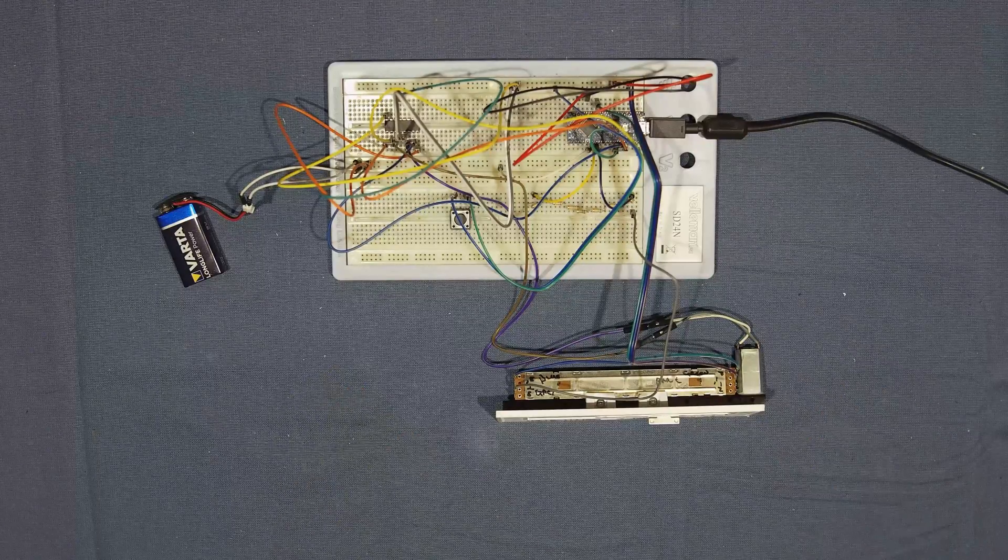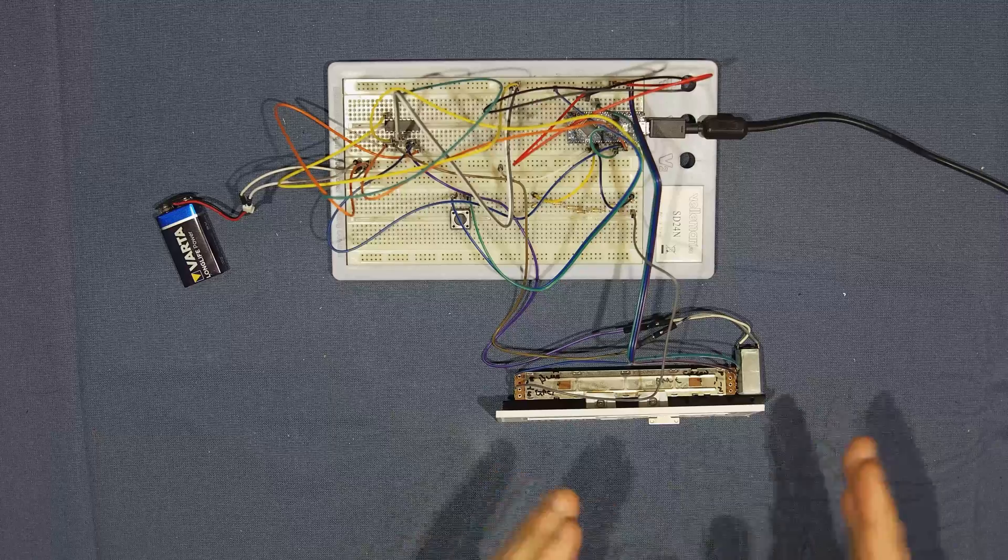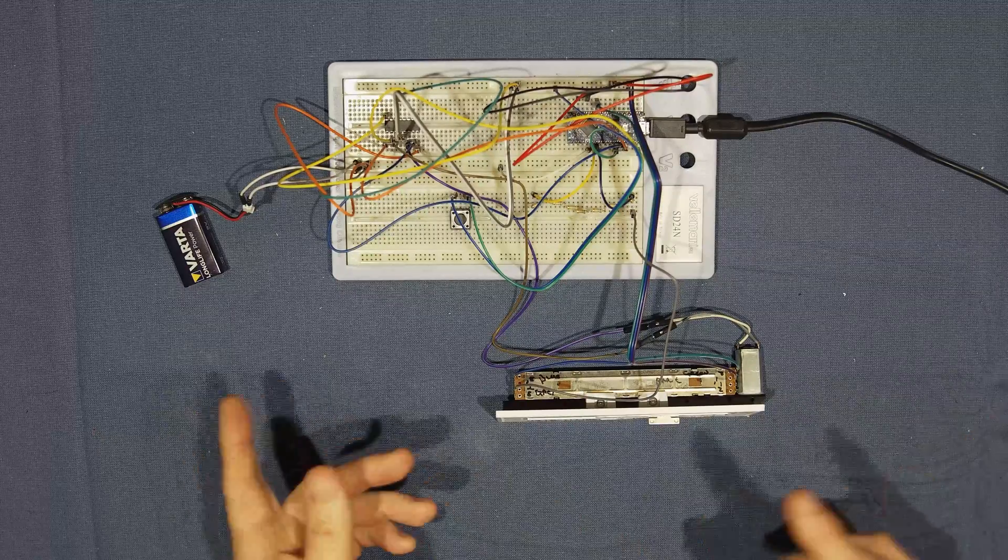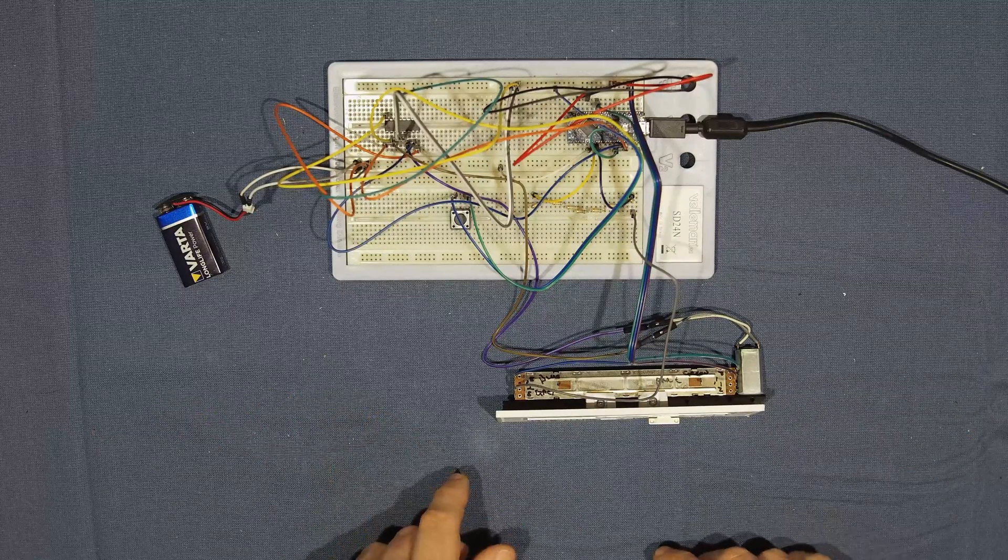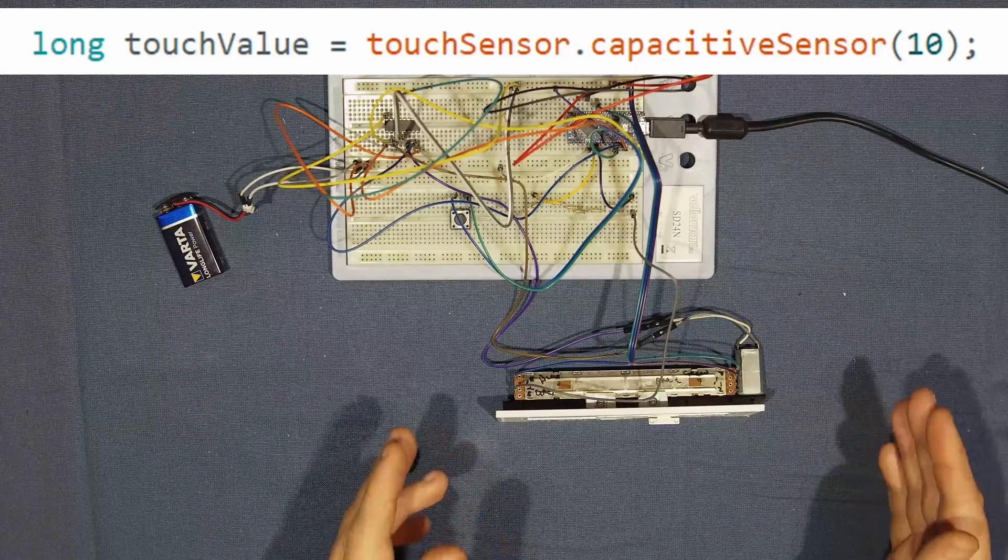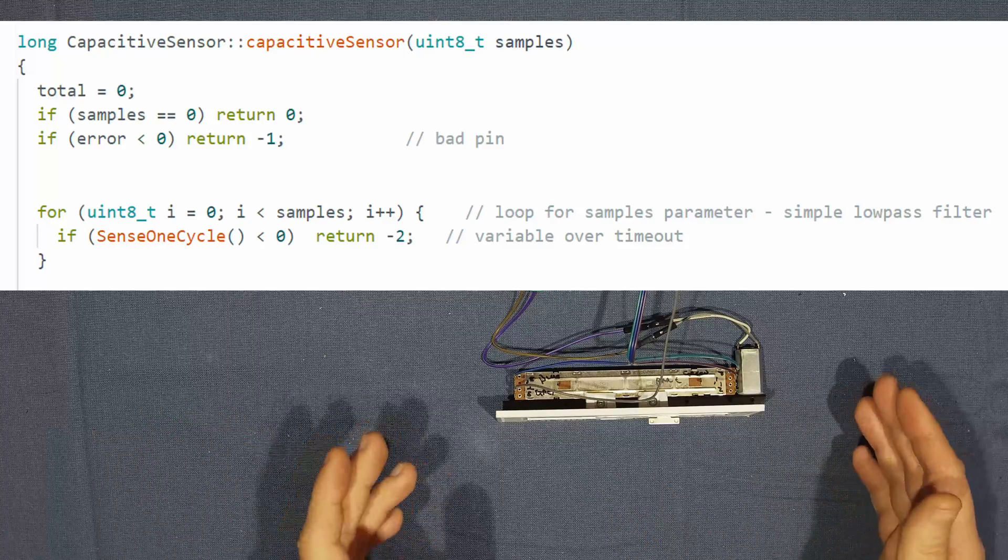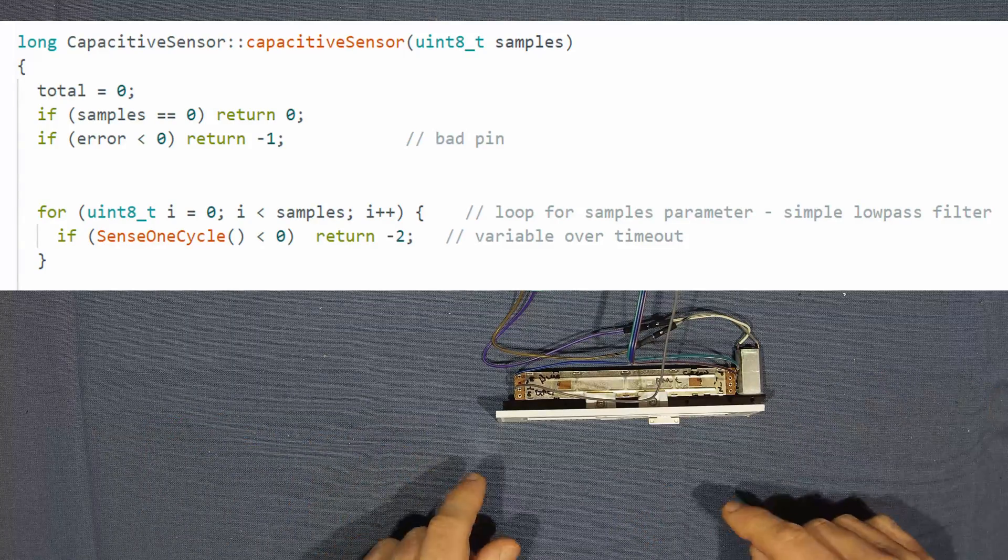What most capacitive touch tutorials don't explicitly mention is that you're measuring change over time. So looking at that earlier call with the capacitive sensor library, you'll notice the parameter of 10. That's how many samples to take, because you need to measure the change. That means it sits in a loop for however many iterations you've requested, before returning to your code.